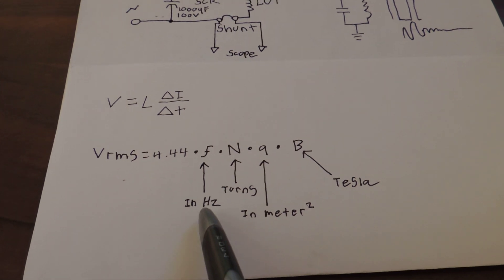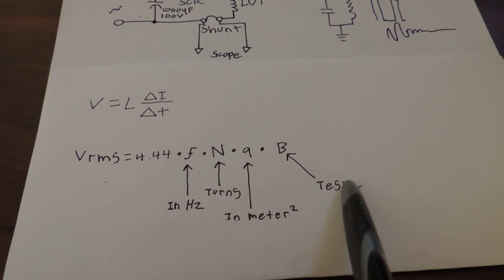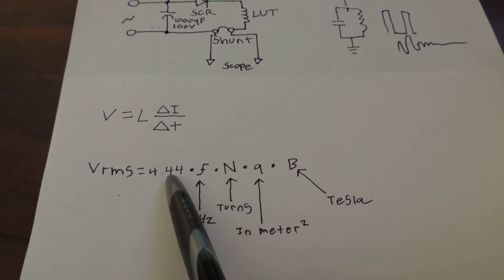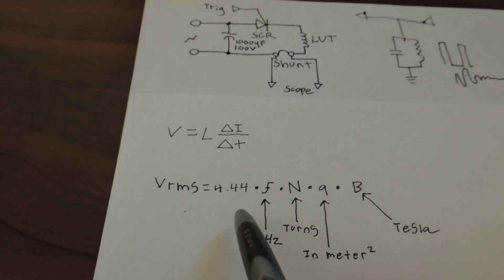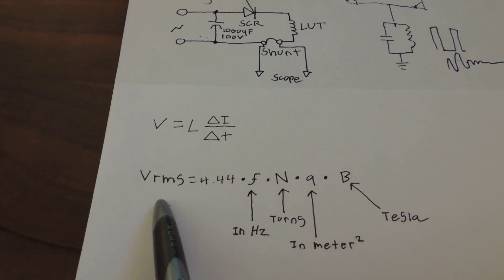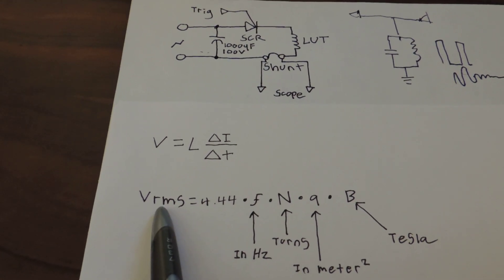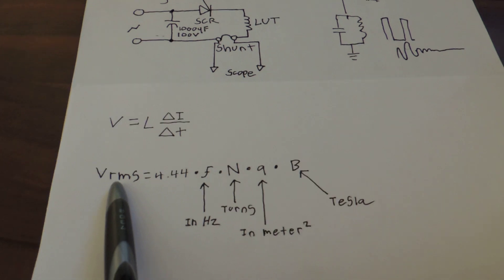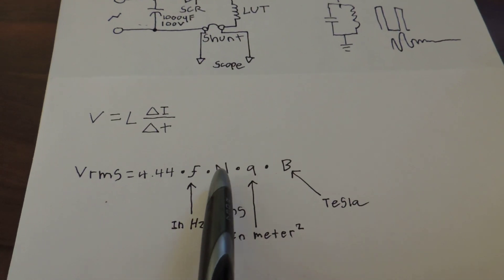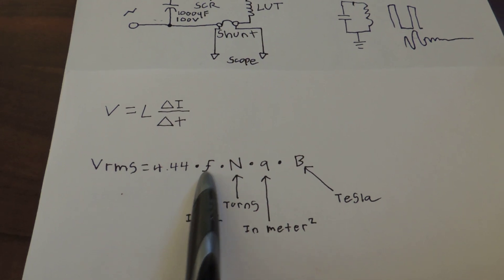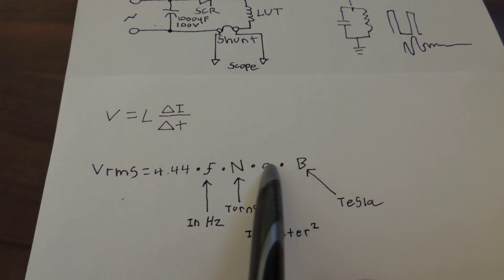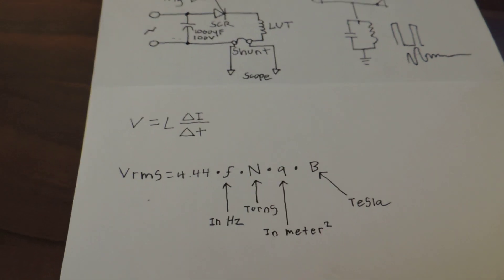When you take all these values and you multiply them together, and multiply them times the constant 4.44, which is the square root of, I can't remember off the top of my head, you get a voltage RMS. This voltage RMS is the maximum amount of voltage you can apply to the fewest number of turns at a given frequency that will not saturate this core for this cross-sectional area and this peak flux density.